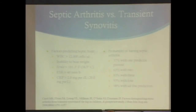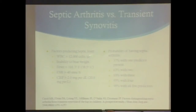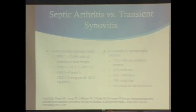Comparing septic arthritis versus transient synovitis — this is probably the question we get all the time. The Kocher criteria include: white blood cell count greater than 12,000, refusal to bear weight, fever greater than 101.3°F, ESR greater than 40, or CRP greater than 2 (or 20, depending on your scale). The probability of septic arthritis dramatically increases with more of these findings present.